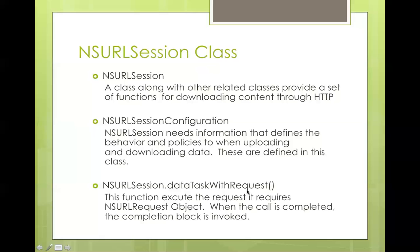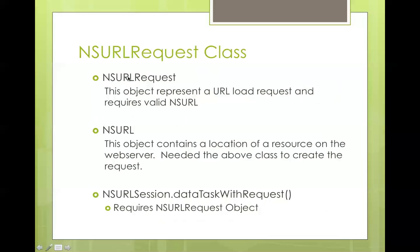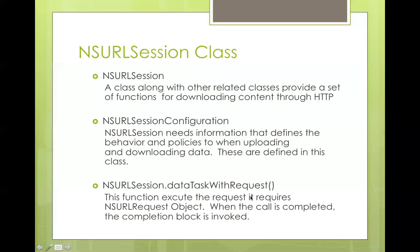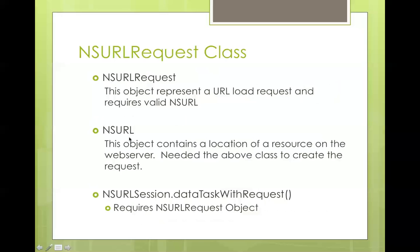NSURLRequest is the actual request object. When you invoke it, you will get the data back. The data task with request function requires an object of NSURLRequest. When it's completed, there is a completion block inside it that gets invoked. Inside that block, if it was successful you do something with the data, or if there is an error you send out messages about the error. NSURLRequest represents the URL load request and requires an NSURL, which is the location of the service you are trying to call on a particular web server.